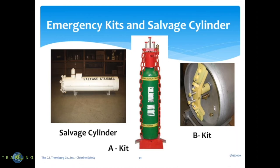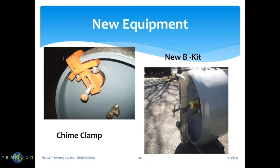You have the B kit and the A kit for 150-pound cylinders. Most places are equipped with both of those. The new B kit is very easy to install with a chime clamp — very simple and very quick. Everyone should be trained on how to use the B kit, especially if you're using ton cylinders.